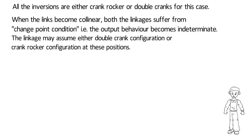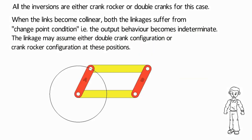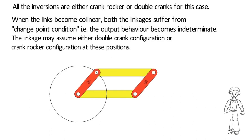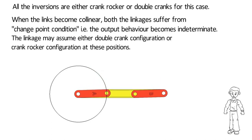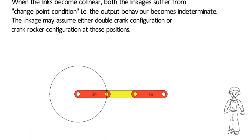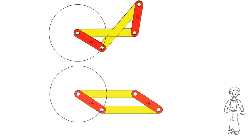Let us understand it with the help of an example. Consider the parallelogram linkage — note that link A is the input crank. As the crank rotates, the links become collinear; this is the first change point condition. At this position, the motion of link B becomes unpredictable. It can go either of the two ways.